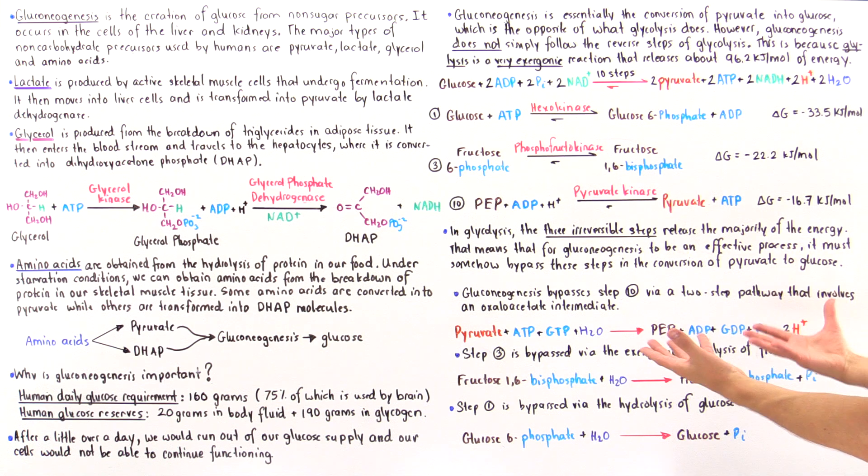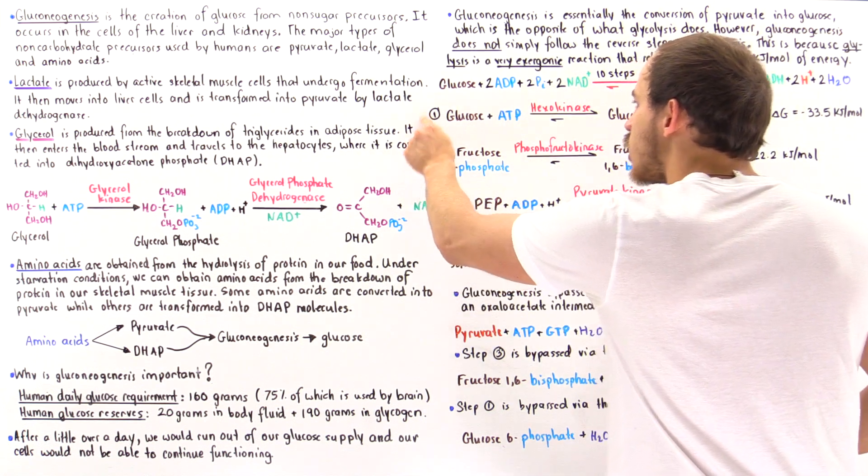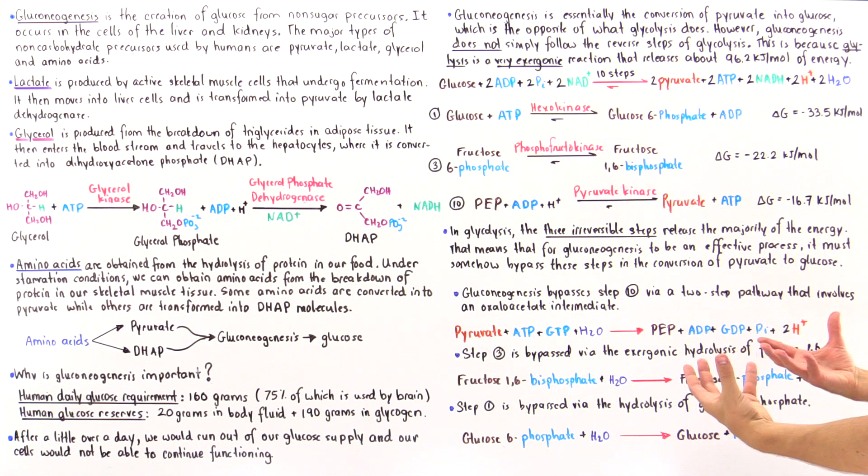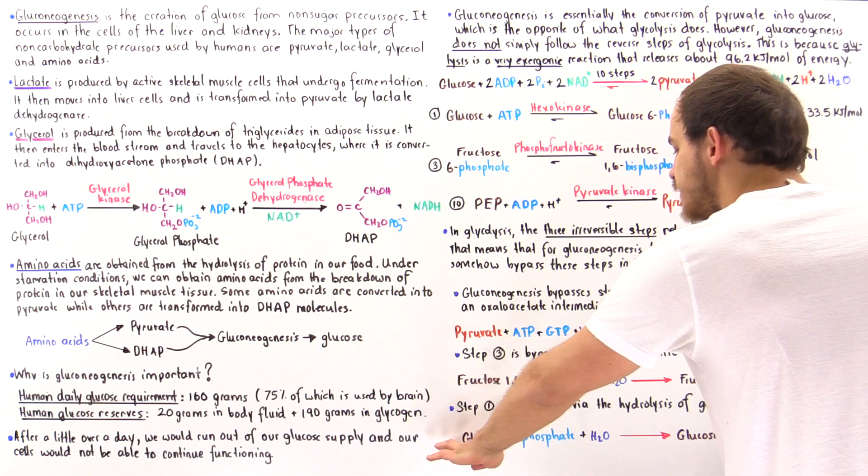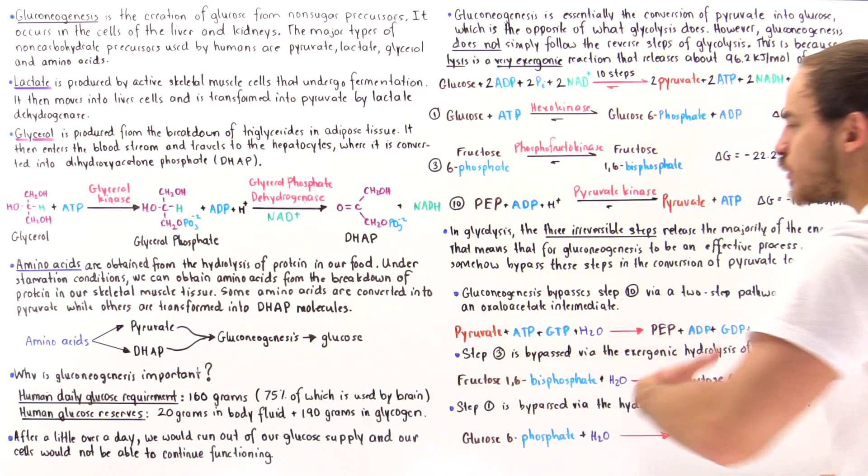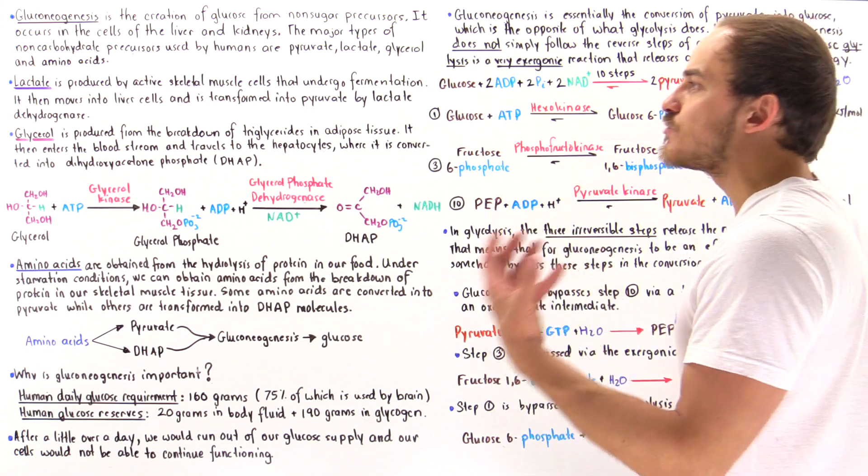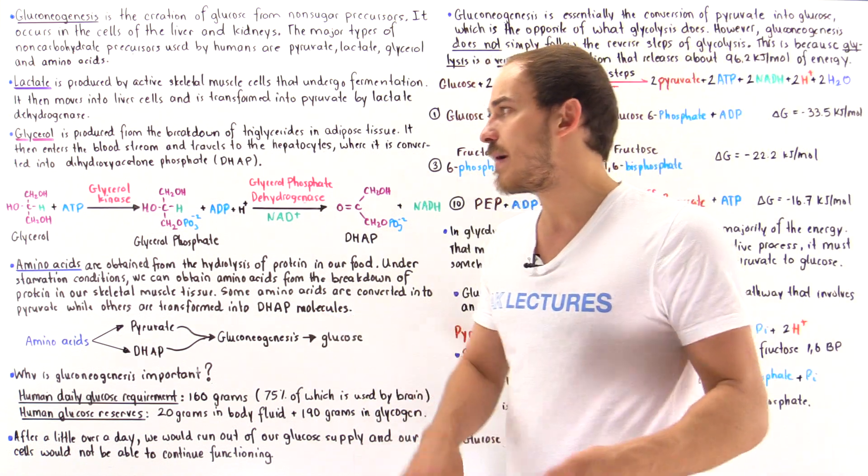Now, by the same exact reasoning, steps 3 and 1 are also bypassed by using this step and this step respectively. So in each one of these steps we basically use a simple hydrolysis reaction, and we'll talk about the details of that in the next lecture.